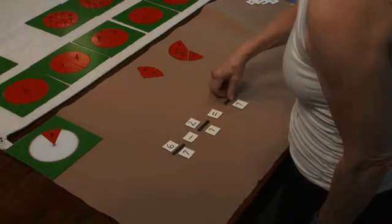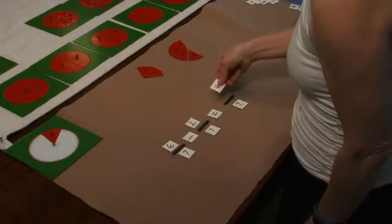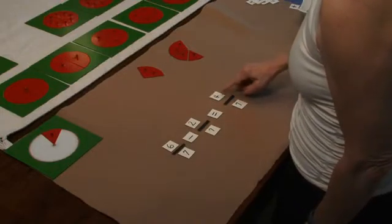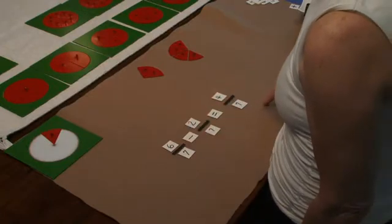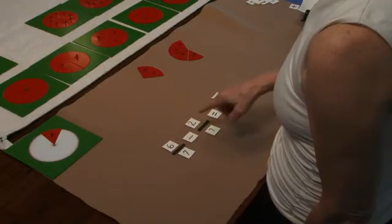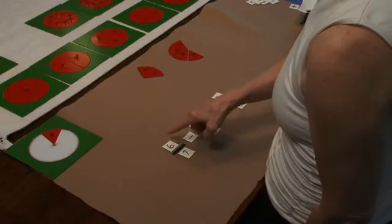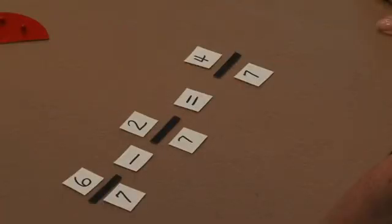So 6/7 take away 2/7 equals 4/7. And once again, in this work, we see that all the activity, all the action takes place with the numerators. We can see 6 minus 2 equals 4.